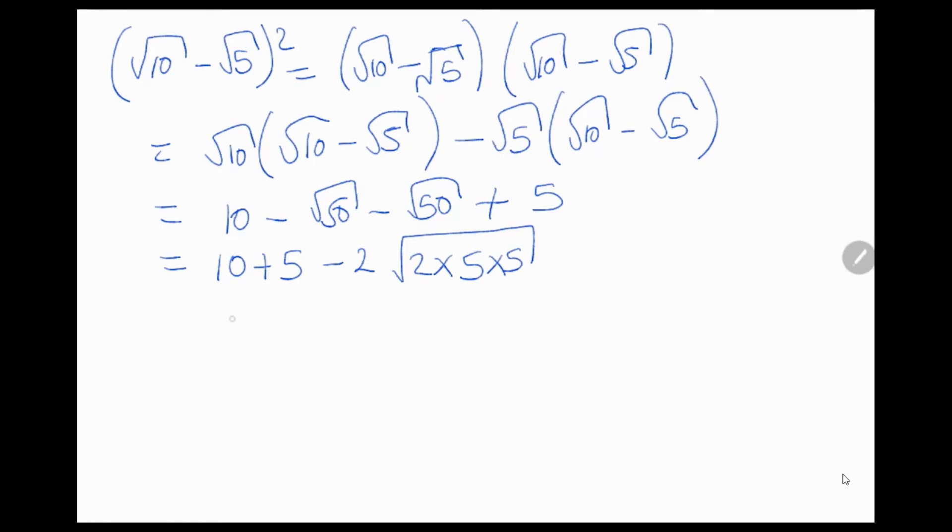Square root of 25 is 5, so we take it out, so it becomes 10 plus 5, 15 minus 2 times 5 square root of 2. This becomes 15 minus 10 square root of 2,